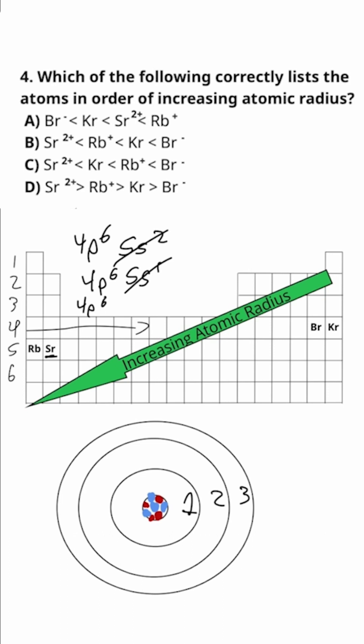all we need to think about is the number of protons in each nucleus. As the number of protons decreases, then the radius should increase, meaning bromine should be the largest, followed by krypton, then rubidium and strontium is the smallest, which is shown by option B.